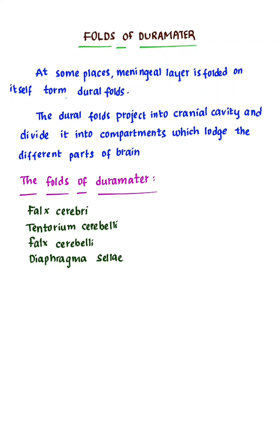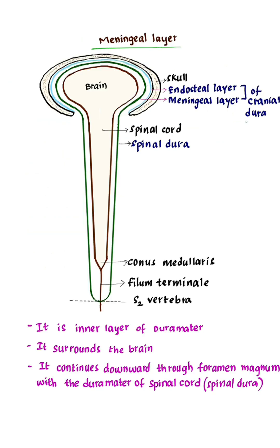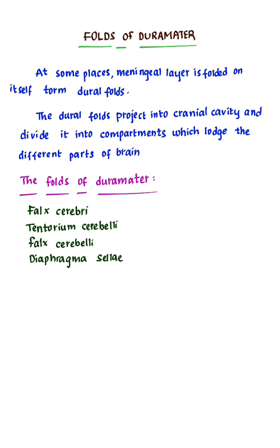Folds of dura mater: At some places, the meningeal layer is folded on itself to form dural folds. Dura mater has two layers — the outer endosteal layer and the inner meningeal layer. The inner meningeal layer is folded on itself at some places to form dural folds. Dural folds divide the cranial cavity into compartments.